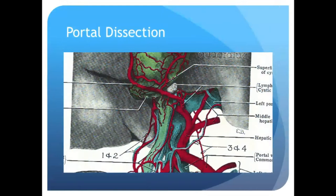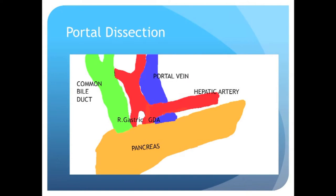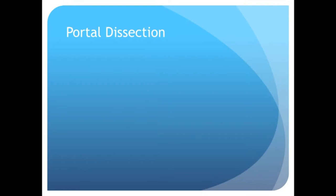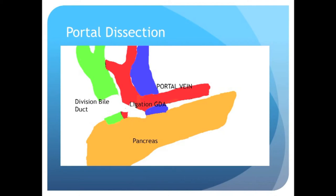We next tend to proceed in a north direction by beginning the portal dissection. The portal dissection contains the hepatic artery, the portal vein, and the common bile duct. The portal dissection is depicted in this animation. The common bile duct is in green, the hepatic artery in red, the portal vein in blue, and the pancreas in gold. The surgeon begins by division of the common bile duct, division of the gastroduodenal artery, and exposure of the anterior surface of the portal vein.